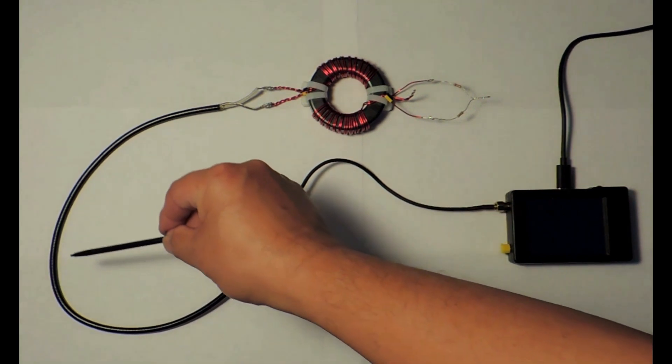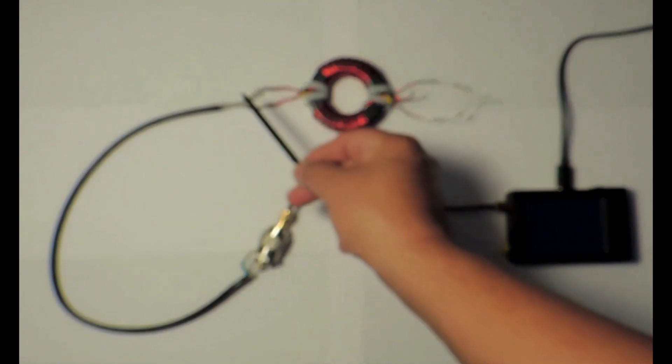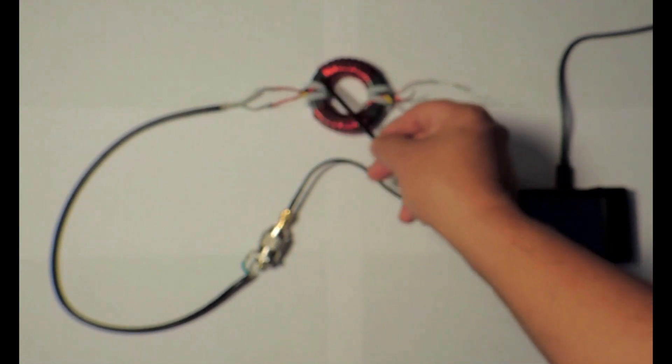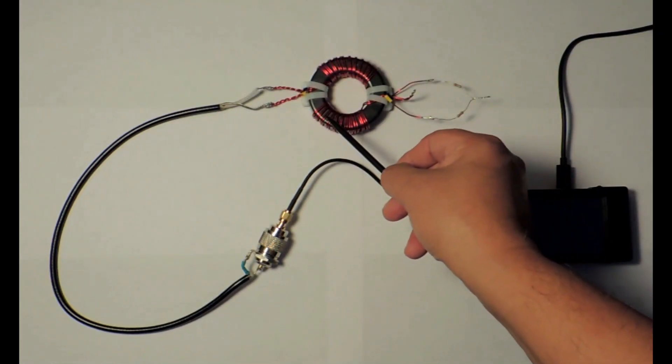The SO239 connector is soldered to an RG58 coaxial cable. The ends of this RG58 cable is soldered to the input terminals of the 4 to 1 unun.